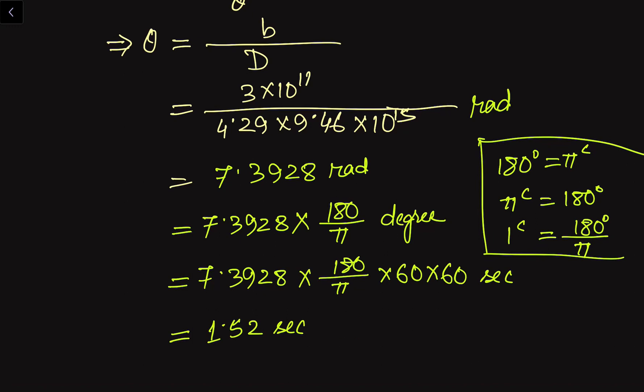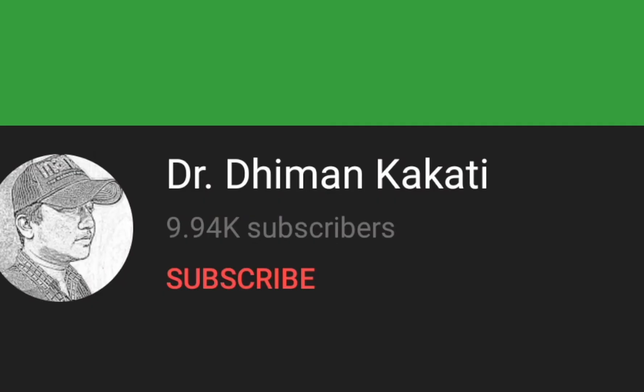We have already seen that the distance is expressed in light year units — 4.29 light years — and this is the parallax angle: 1.52 arc-seconds. Thank you for watching. If you have any questions, please put them in the comment section below. Also like, share, and subscribe to my channel. Thank you.